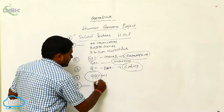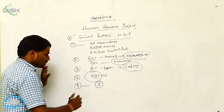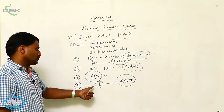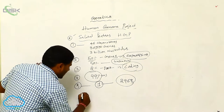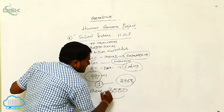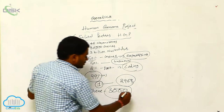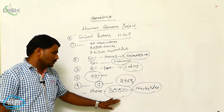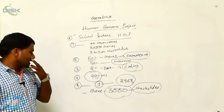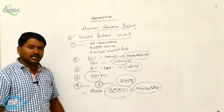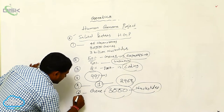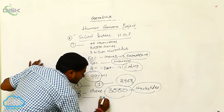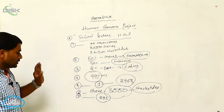As per the Human Genome Project, chromosome number 1 is the biggest chromosome, having 2,968 genes. Each gene has an average of 3,000 nucleotide sequences. The shortest chromosome is the Y chromosome, which has only 231 genes.